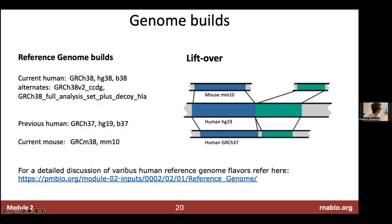Make sure you're using the right genome build. This will probably happen at some point in the course — we'll go to load some data in IGV that was aligned with HG38, but we've selected HG37, and the data doesn't make sense. That's because your data is mismatching with your reference genome.